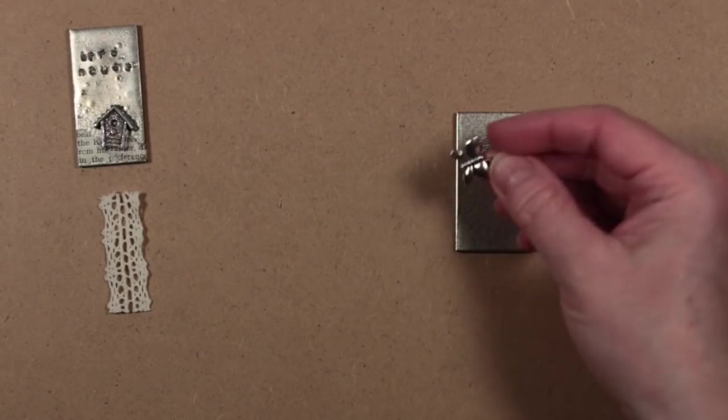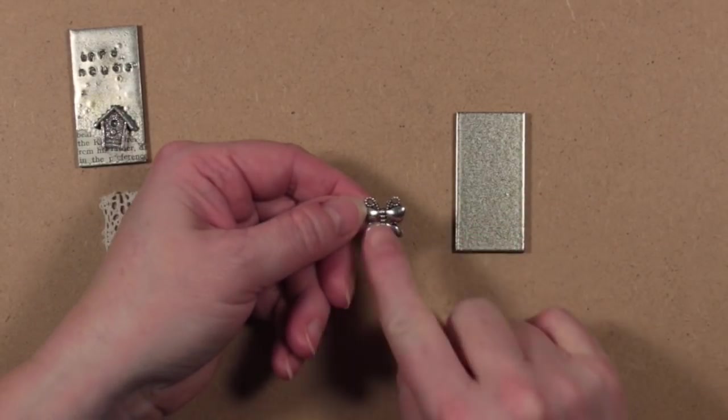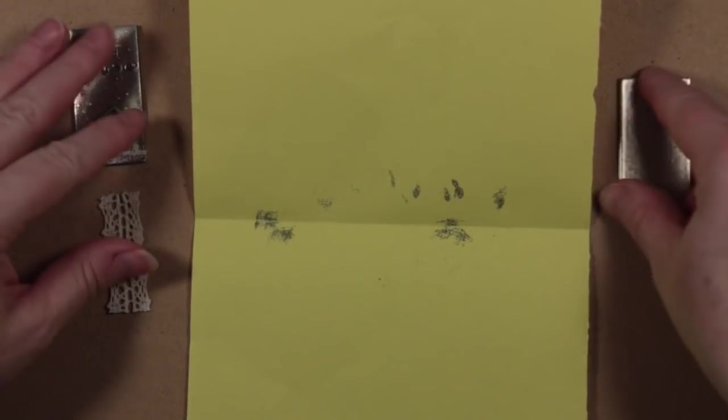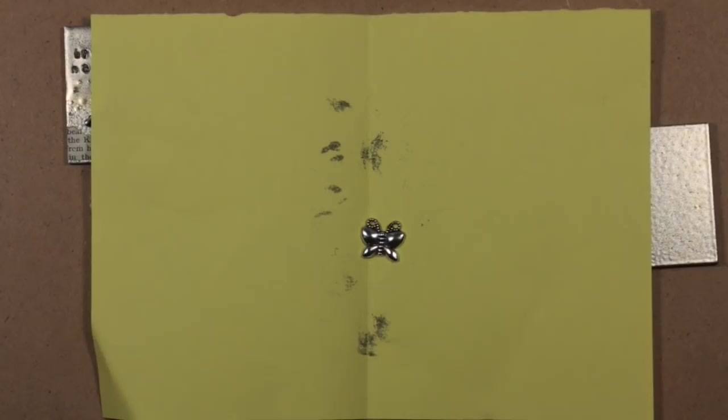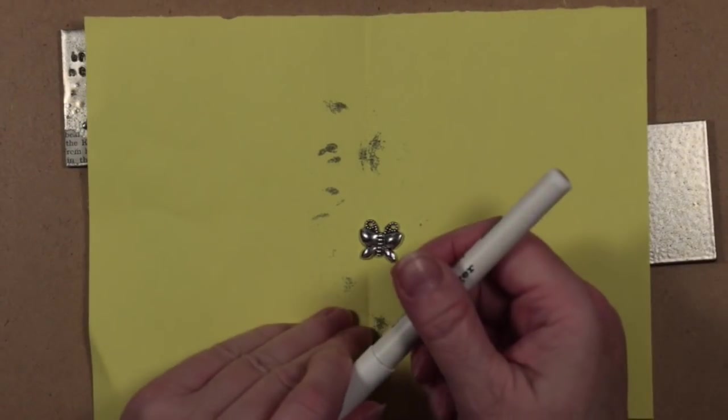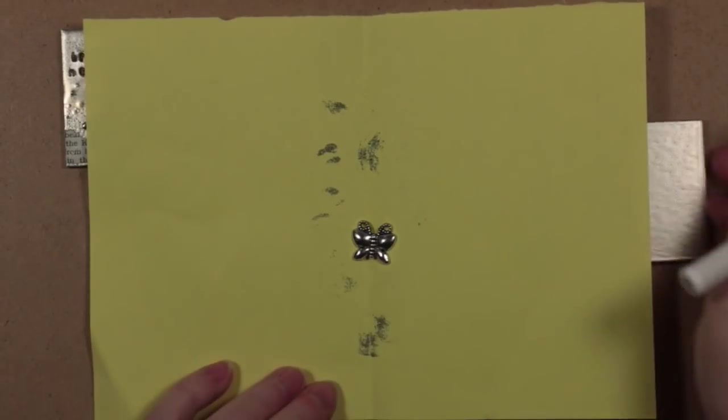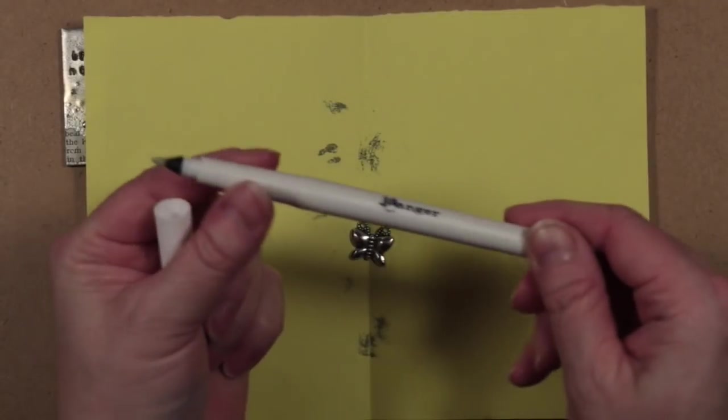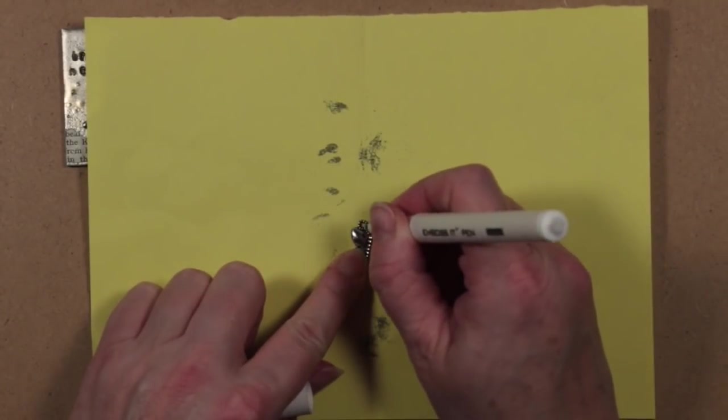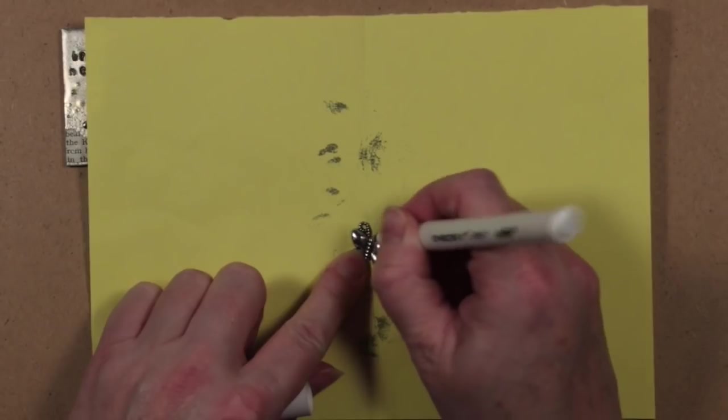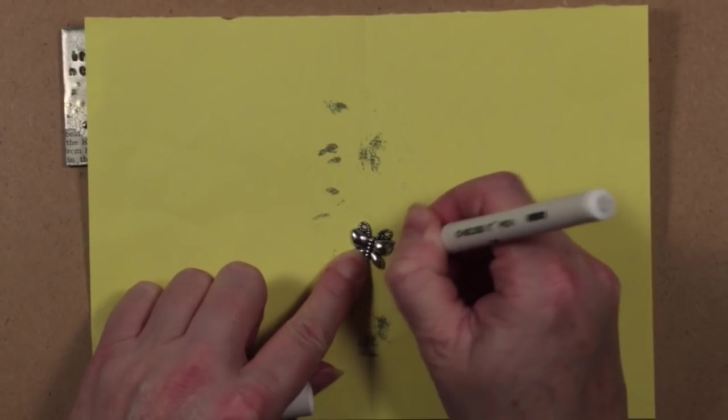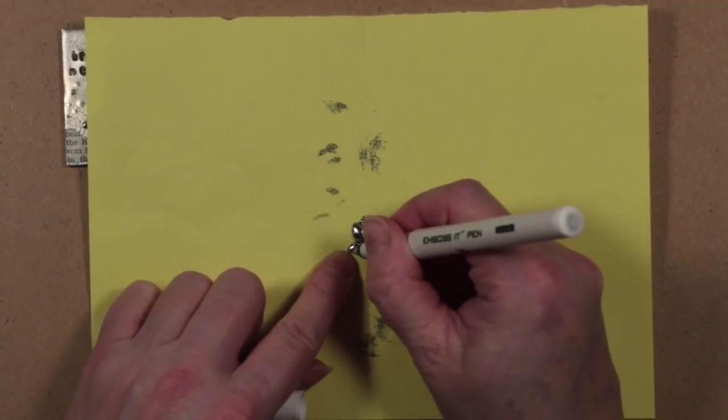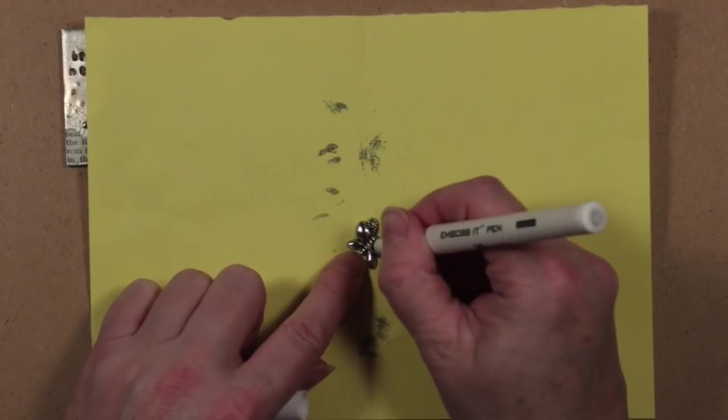I'm going to use the same powder on this as well. This time, to make sure that the embossing powder gets into all the little nooks and crannies, I'm going to use a Ranger emboss-it pen. This is a clear emboss-it pen, and it means that I can put the embossing ink into all the little nooks and crannies on the butterfly, because if I just pop the butterfly onto the flat ink pad, it might not get into all these little areas.